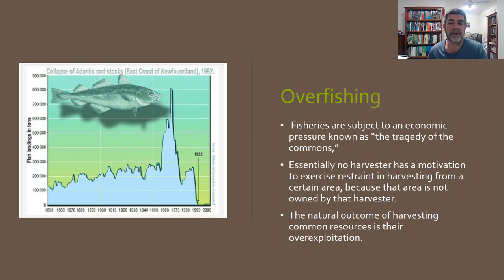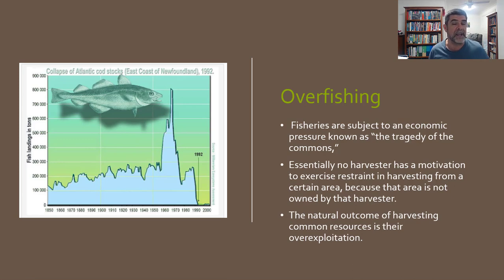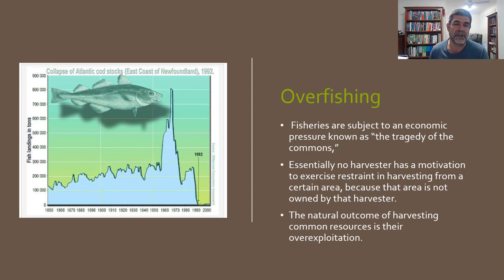One of the easiest things to think about when talking about over-harvesting is over-fishing. Fisheries are subject to an economic pressure known as the tragedy of the commons. If I have a farm, I would generally have borders around it, something that says this is mine, and therefore any organisms inside it belong to me — you'd need permission to come in and harvest them. This is not the case with most fisheries because most are in the ocean, and the ocean, other than territorial waters, doesn't really belong personally to any individual.